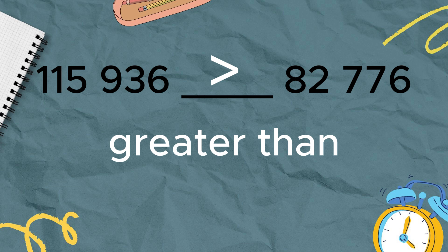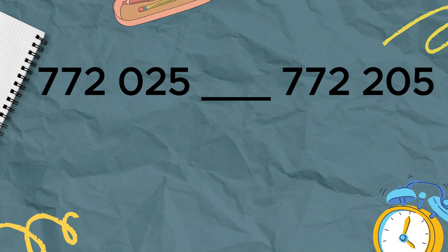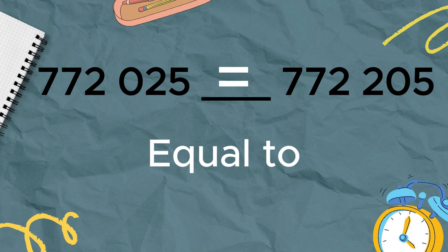But what if the numbers are like this? What symbol are you going to use? Very good! We use equal to. When we say equal to, the two numbers are exactly the same.